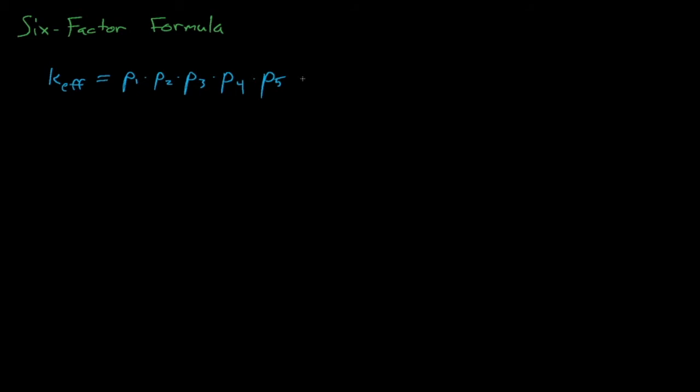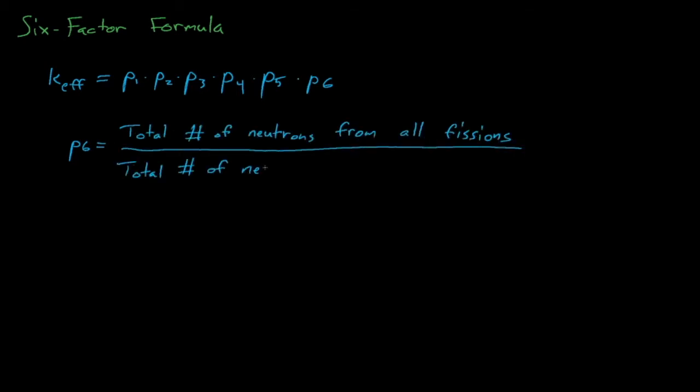In other words, our system's eigenvalue, which is the expected number of fission neutrons created by each fission neutron, is equal to the product of all of these probabilities. We'll also add this P6 term on the end of this expression, which corrects our previous assumption that only thermal neutrons can induce fission reactions.